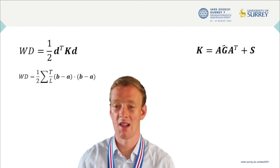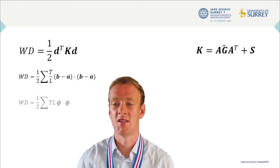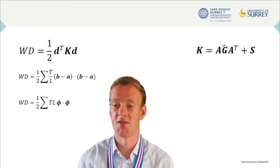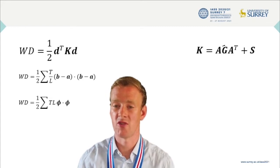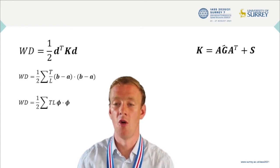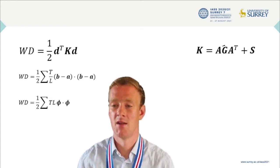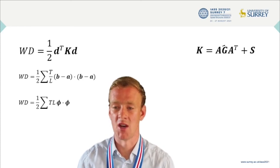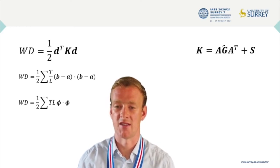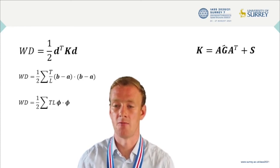The force density has an unclear meaning within graphic statics, so this is reworked into a new equation where phi is the rotation of the bar in the mechanism, or B-A over L. The TL term has a clear meaning within graphic statics, and so this can be leveraged to find the work done by a mechanism.